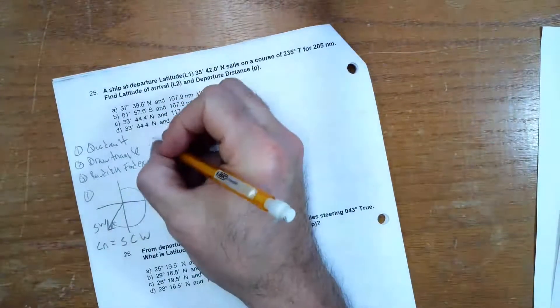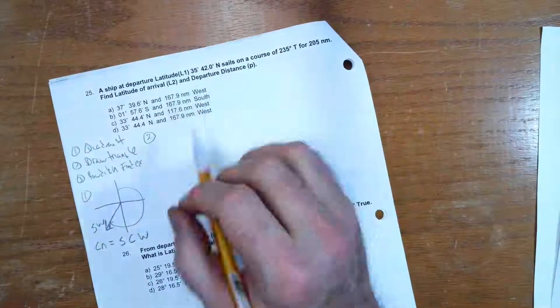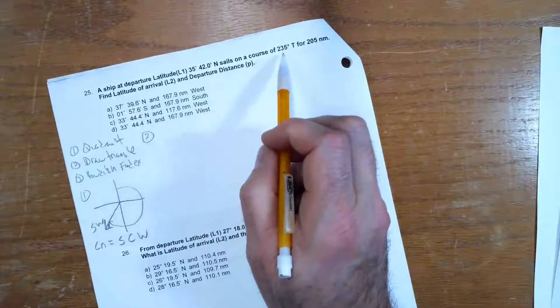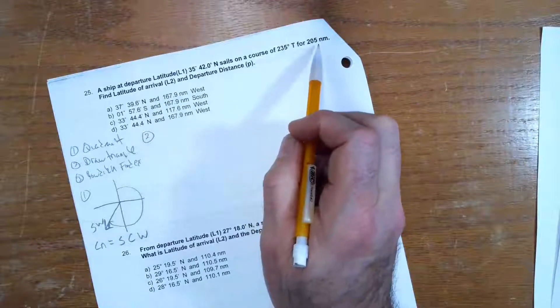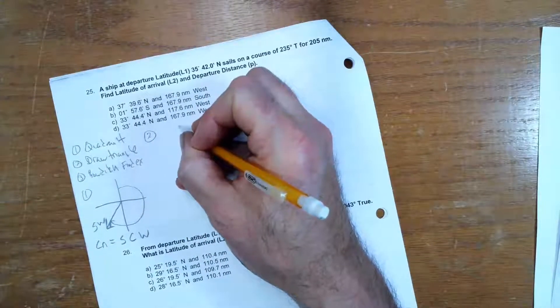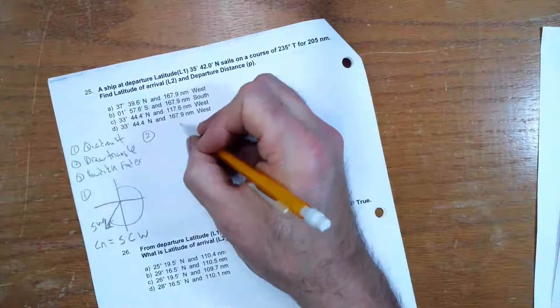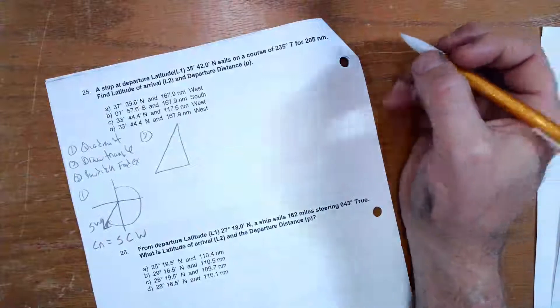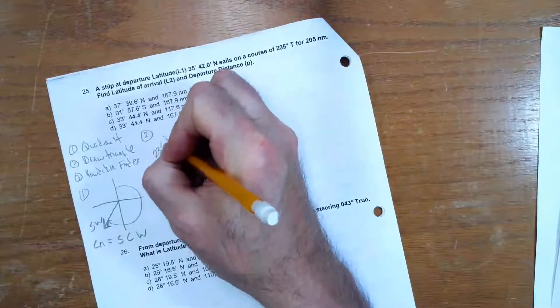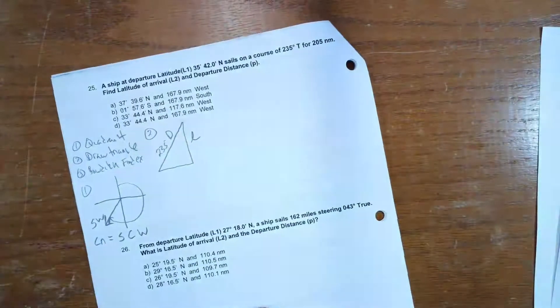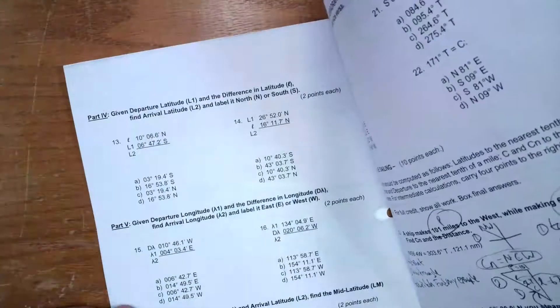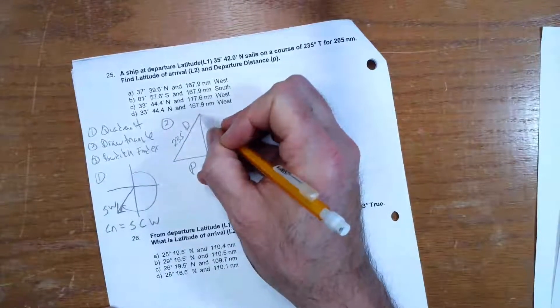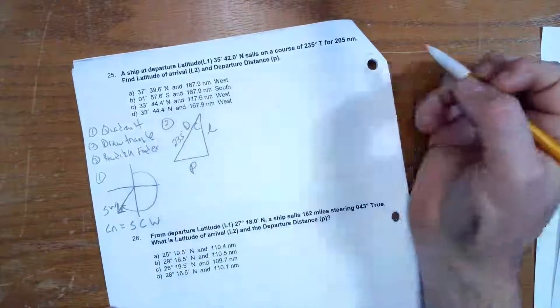So now the next thing I want to do is I want to draw my triangle. So I always draw the north, south, east, west thing first. So I'm going to go 235° for 205 miles. What that means is that I'm going south and west. This is my triangle. So 235° is this. That's D. What's this over here? That's L. And this over here is P. And C is always going to be up here where I started drawing my thing from.